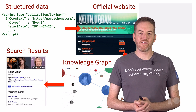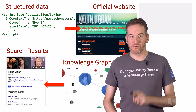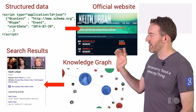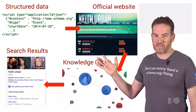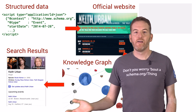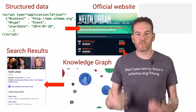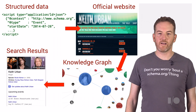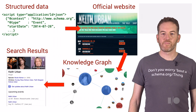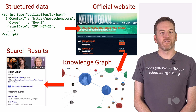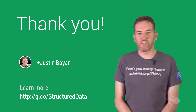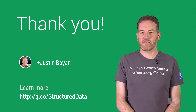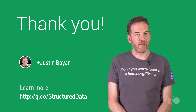And that's all there is to it. When Google next crawls your site, we'll read the markup events, verify that they're consistent with what users see on the web page, and then import them directly into the Knowledge Graph for use across Google products. For more examples and documentation, please visit our help page at g.co/structured-data.